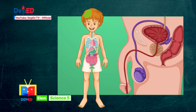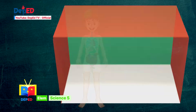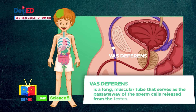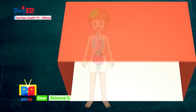Number 2: Epididymis. The epididymis is a narrow, coiled tube that stores sperm cells found along the side of the testes. This part is the temporary storage tube and a passage for the transport of mature sperm. Number 3: Vas deferens. The vas deferens is a long, muscular tube that serves as the passageway of the sperm cell released from the testes. It also connects the testes to the seminal vesicle and the urethra.